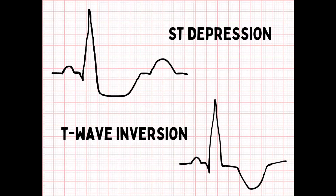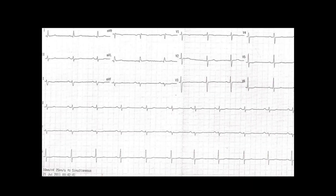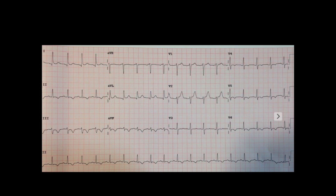Other than that, ST depression or T wave inversions alert you to acute coronary syndrome. Flat T waves can also indicate ischemia, but they can be a chronic and non-acute finding. Simply put, flat T waves pique my interest. If a patient is having chest pain along with flat T waves I'm suspicious for ACS, but I really get suspicious if I see T wave inversions or ST depression.